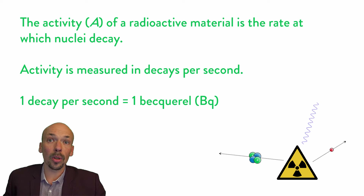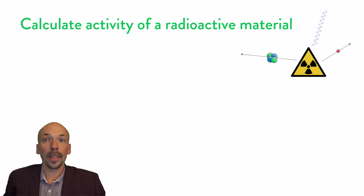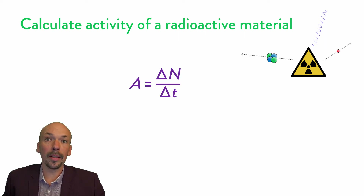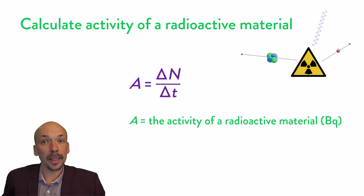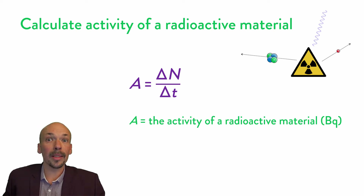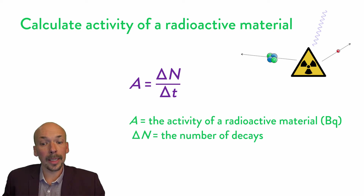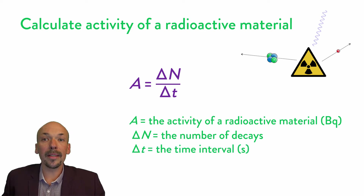In my previous video I talked more about this; now we are going to see how we can calculate it. To calculate the activity of a radioactive material, we need this equation. The activity is the difference in nuclei divided by the difference in time. So the quantity A equals the activity of a radioactive material, measured in becquerel. Delta N is the number of decays, and delta T is the time interval, measured in seconds. It is very important — this is always in seconds.